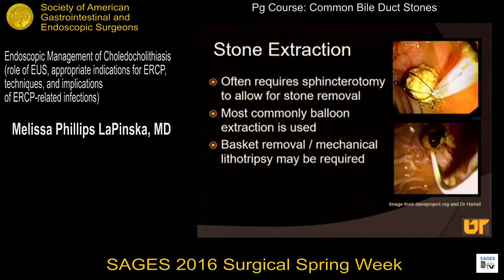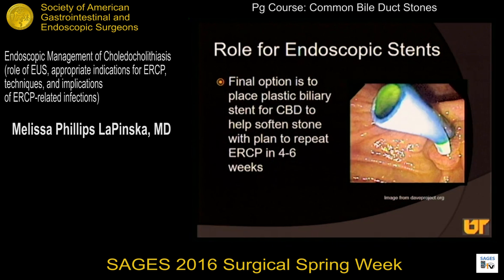In terms of stone extraction, the most common technique is balloon biliary extraction, as shown in the lower photo. This includes putting a balloon above the lowest stone — if there are multiple stones, you'd like to remove them in a sequential stepwise fashion rather than impacting them into the ampulla — and sweeping the stone down into the lumen of the bowel, allowing it to pass spontaneously. Similar baskets seen in earlier videos are often used endoscopically. Endoscopic stenting is also important to consider: with a 75% chance of clearing the stone on the first attempt and 95% on the second, plastic stents placed up into the common bile duct work to soften and slowly mechanically lithotripsy through that stone, allowing for a repeat ERCP four to six weeks later for complete extraction.